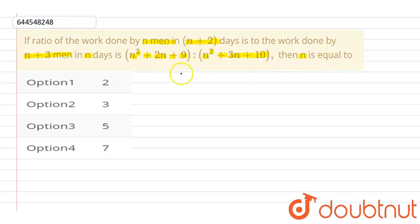We need to find the value of n. Work done by n men in n+2 days will be n(n+2), and n+3 men in n days will be (n+3)n.